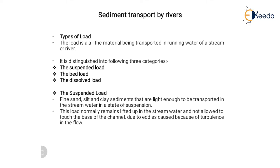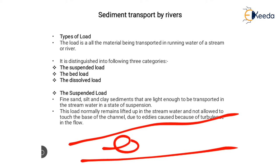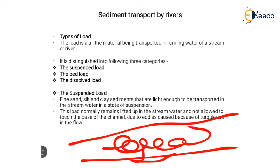Sediment transported by the river is called the load. It is distinguished into three categories: suspended load, bed load, and dissolved load. Suspended load consists of fine sand, silt, and clay sediments light enough to be transported in a state of suspension. This load remains lifted up in the stream water and does not touch the base of the channel due to eddies caused by turbulence. Small particles do not settle to the river bed because of the high pressure of flow and circular motion.